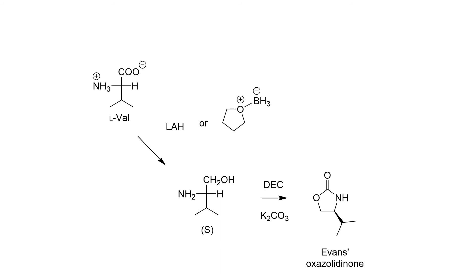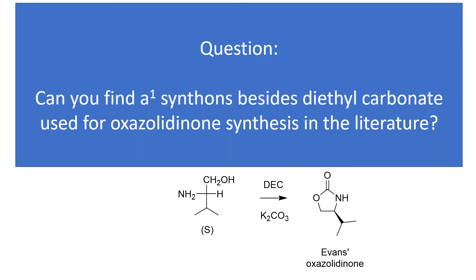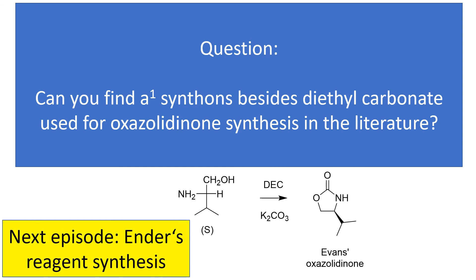Alternatively, a borane-THF complex can be used, which in turn can be made from THF, sodium borohydride, and the oxidizing agent iodine. And now, a question for you: can you find A1 synthons, besides diethylcarbonate, used for oxazolidinone synthesis in the literature? Thanks, and see you next time with Ender's Reagent synthesis.